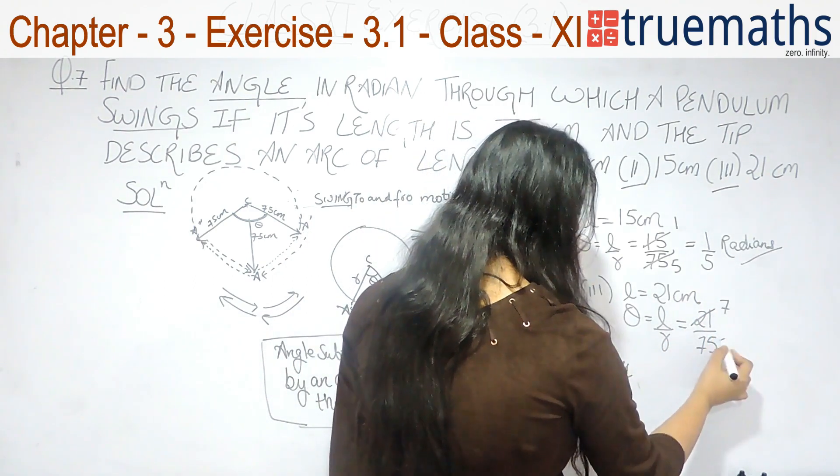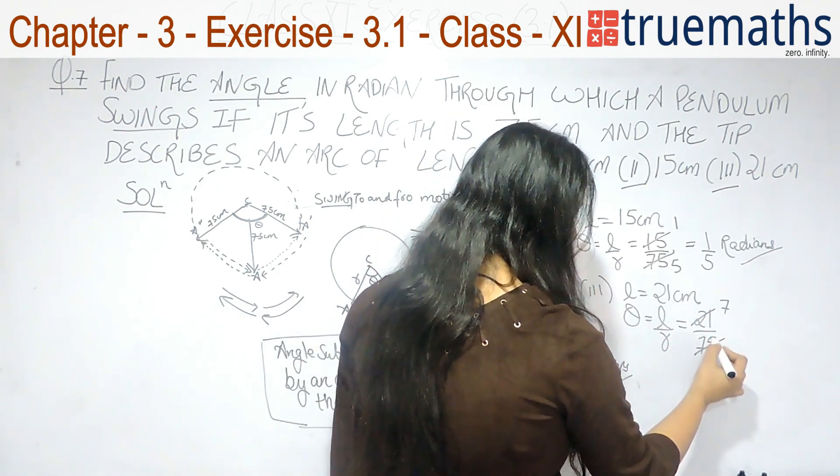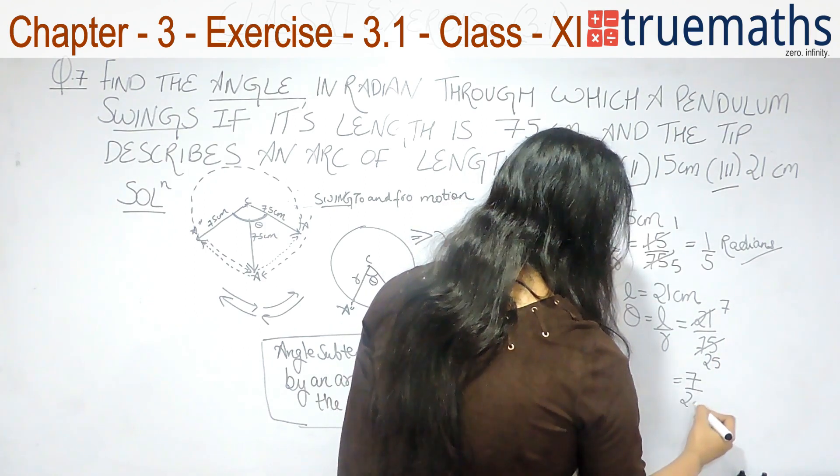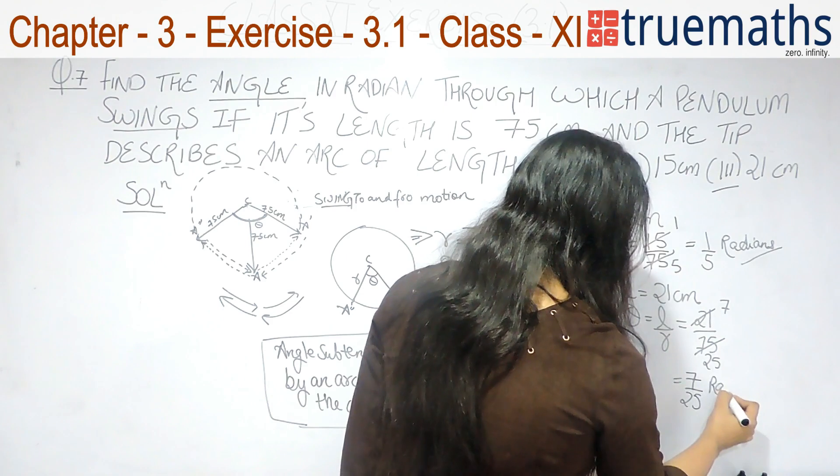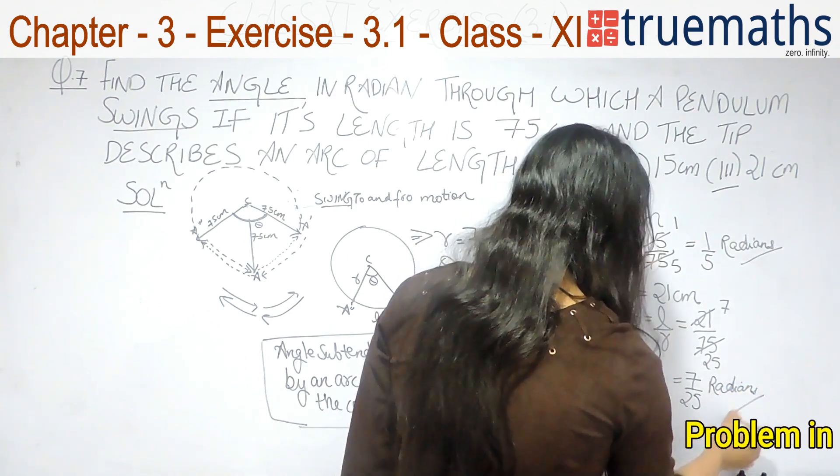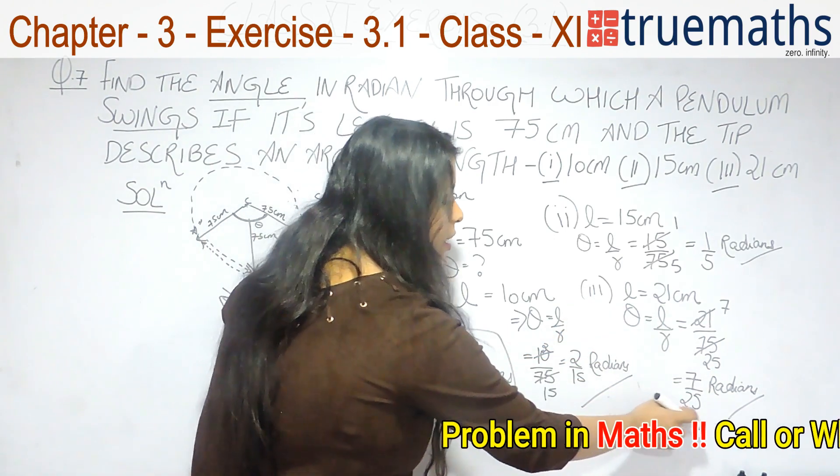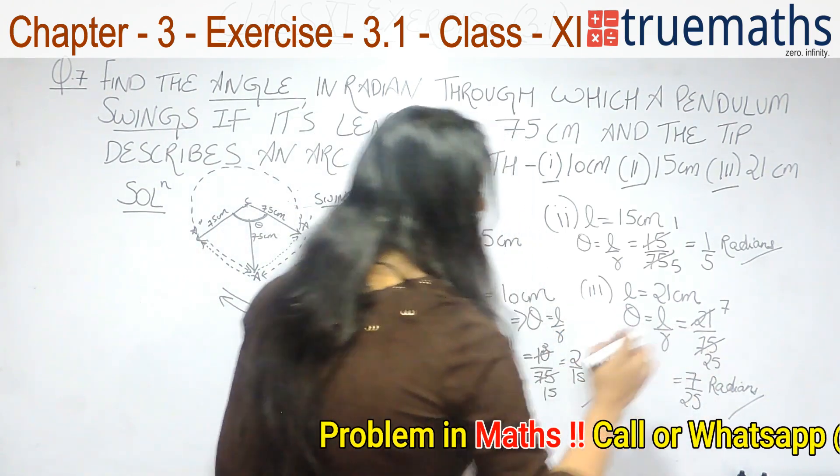So, it comes out to be 7 by 25 radians. So, when L is 21 cm, your theta is 7 by 25 radians.